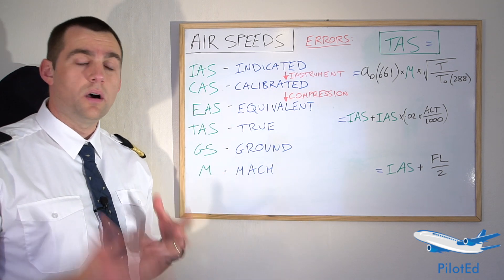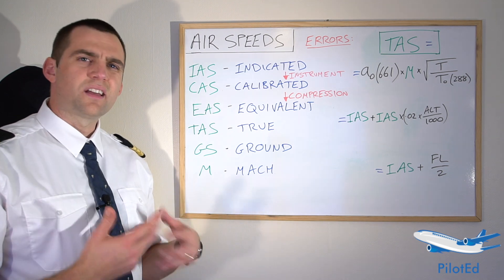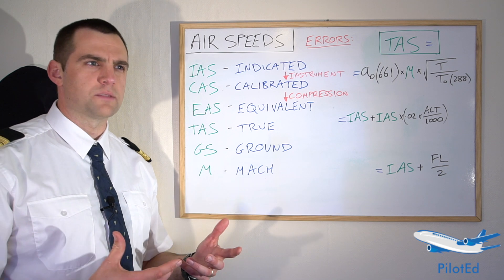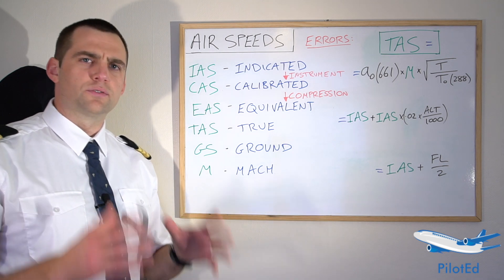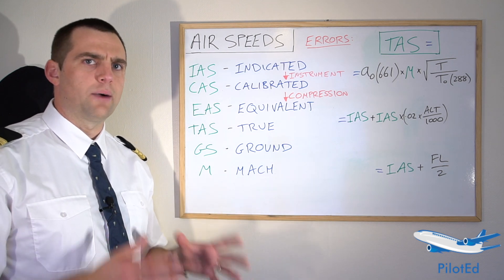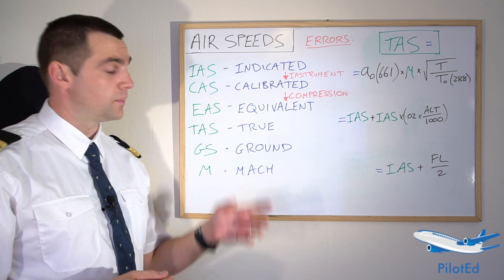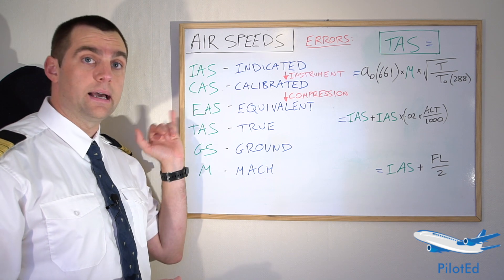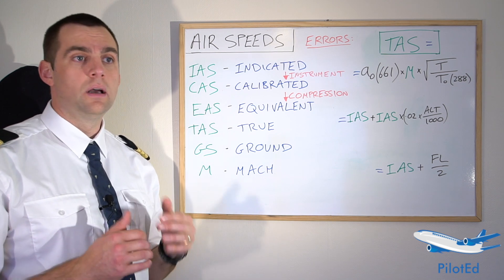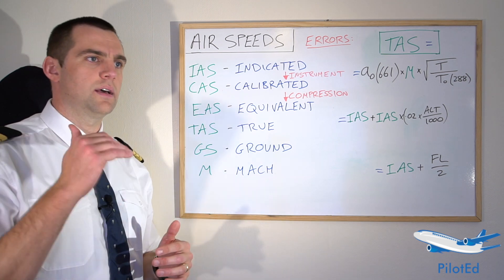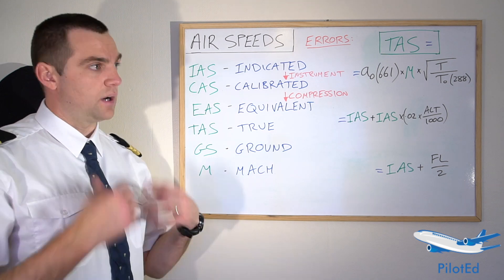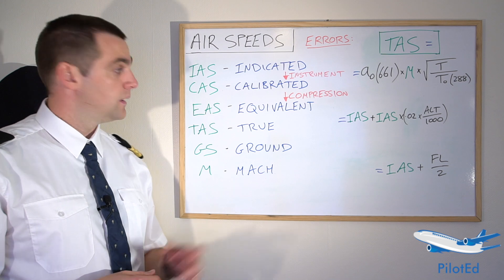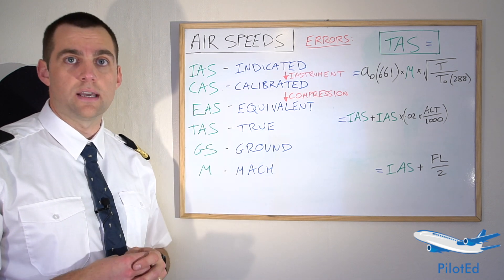Equivalent airspeed is a little harder to define. It's where the dynamic pressure is the same as the dynamic pressure of the true airspeed. There's no real need to concentrate on the definition — what you need to understand is the error and where it comes from. The error is the compression error. The difference between calibrated and equivalent airspeed is negligible up to speeds of about 200 knots and right up to about 10,000 feet. After that, at faster speeds and higher altitudes, that's when it comes into play.